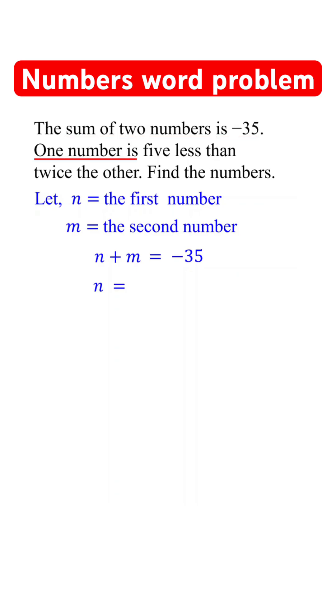One number is 5 less than twice the other can be translated to n equals 2m minus 5.